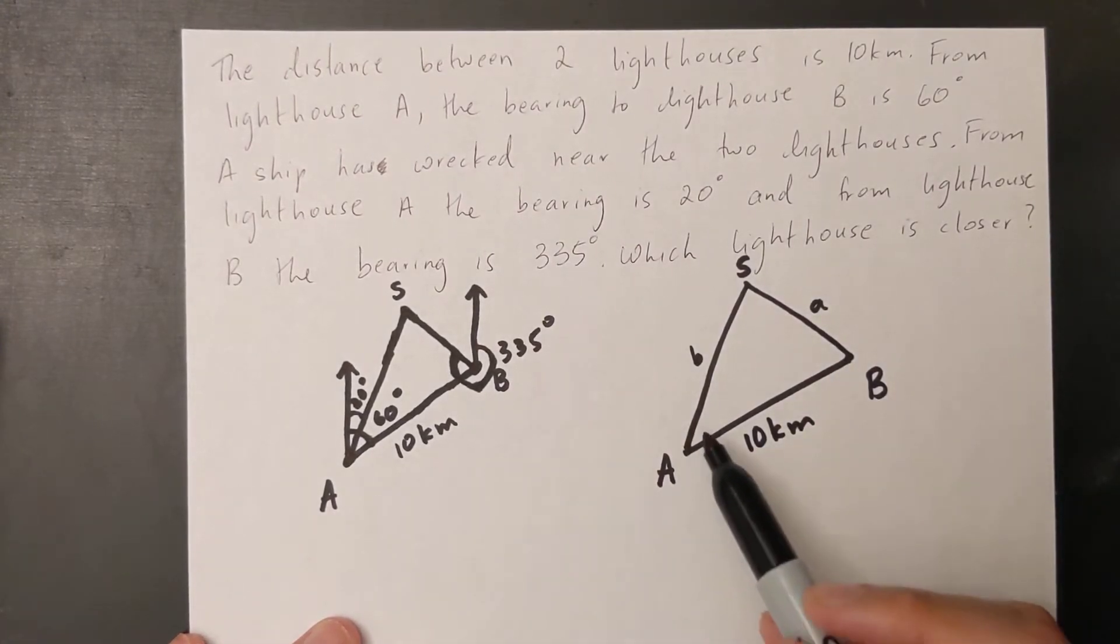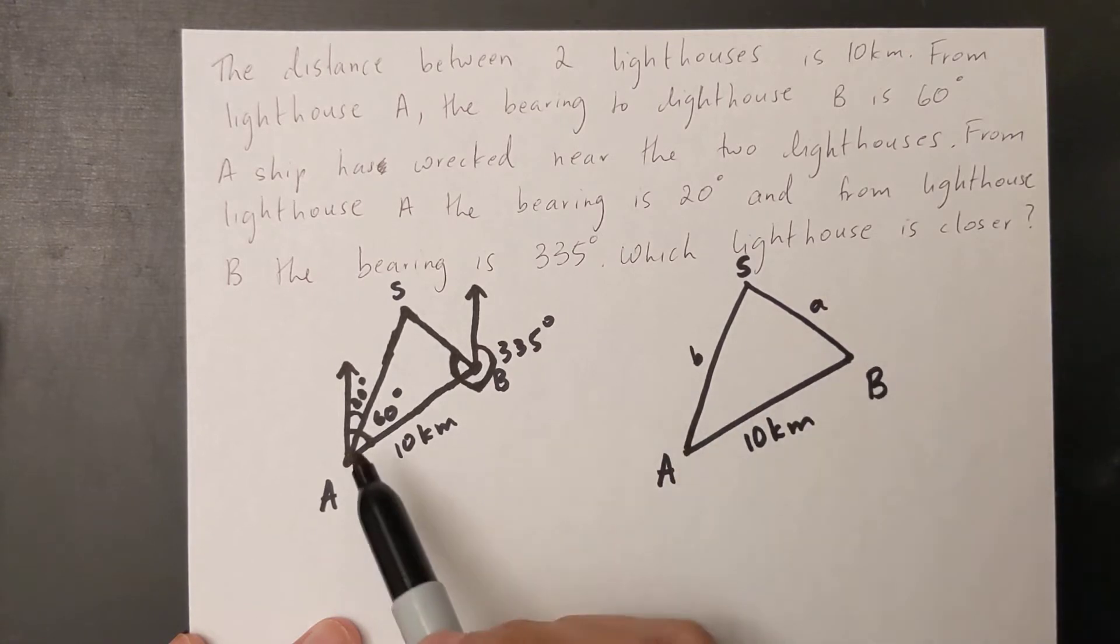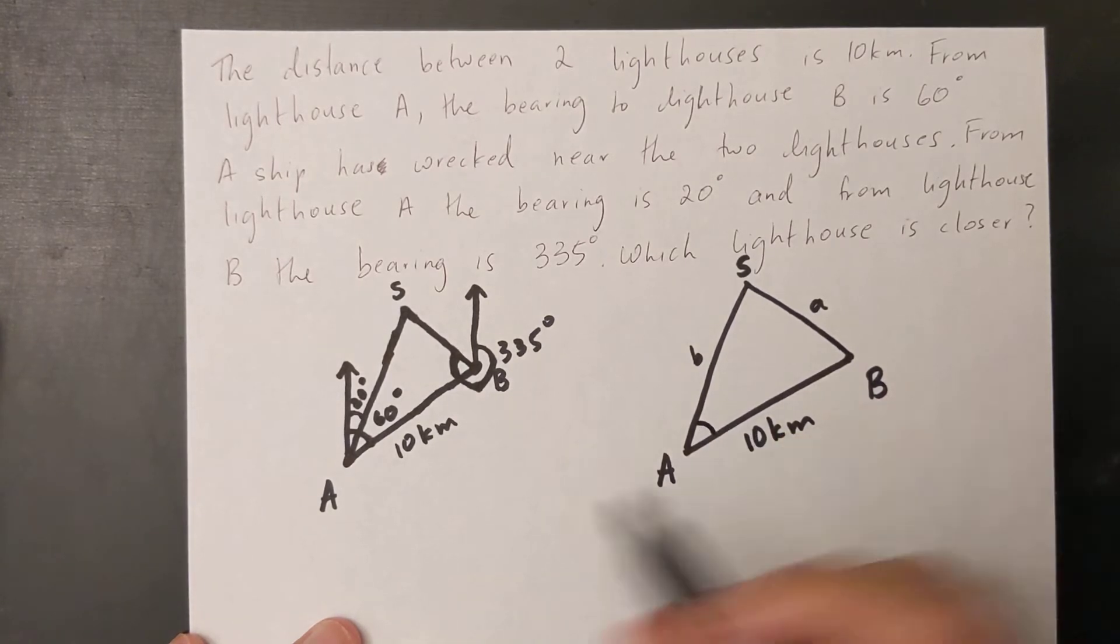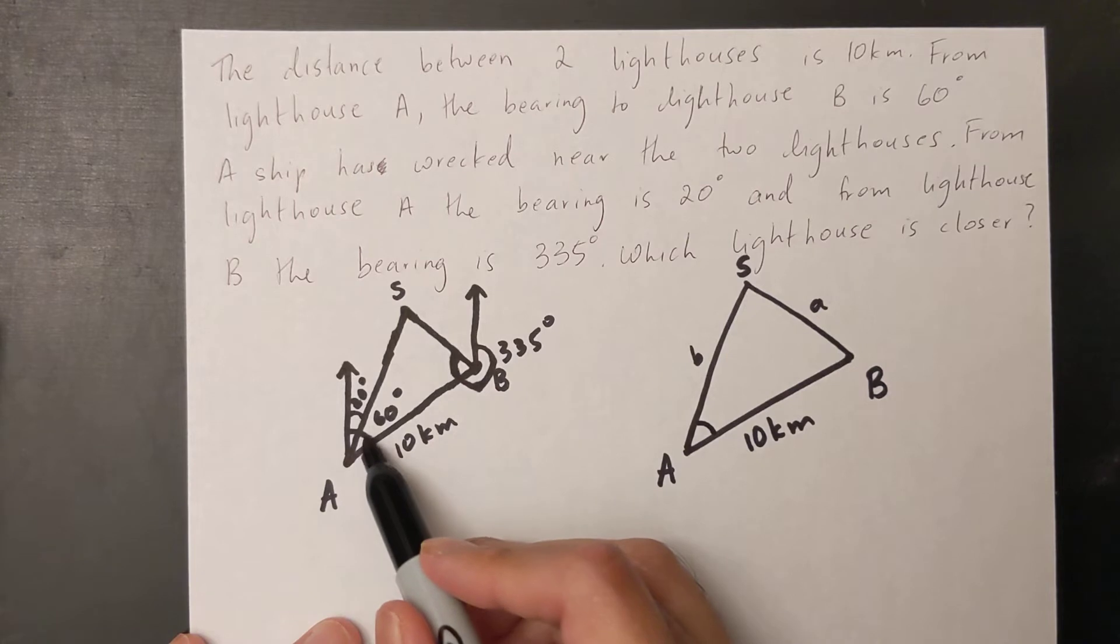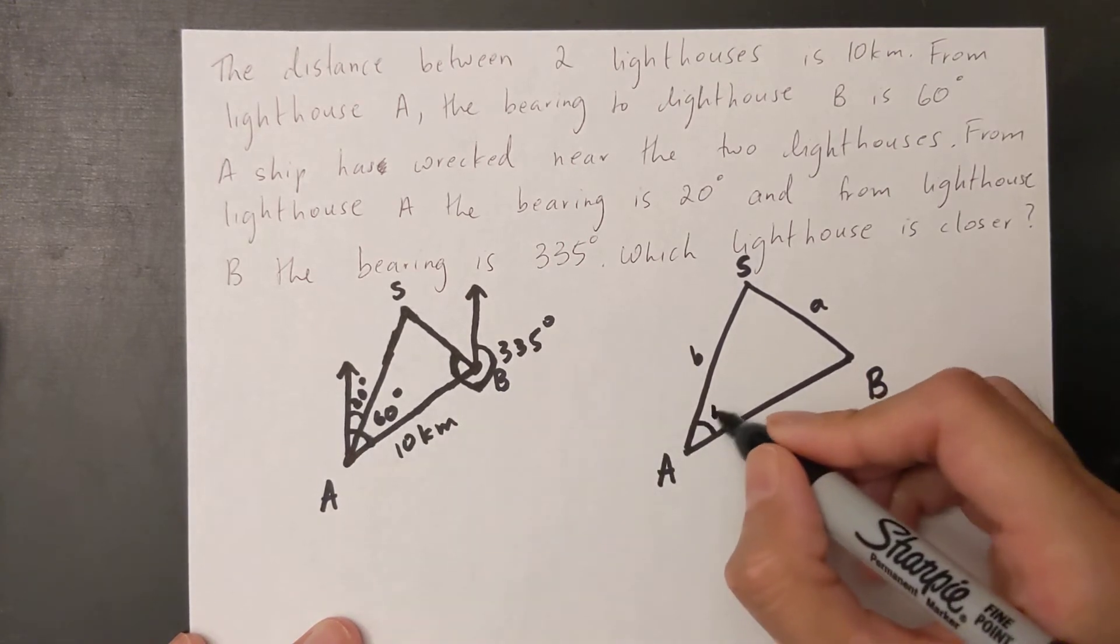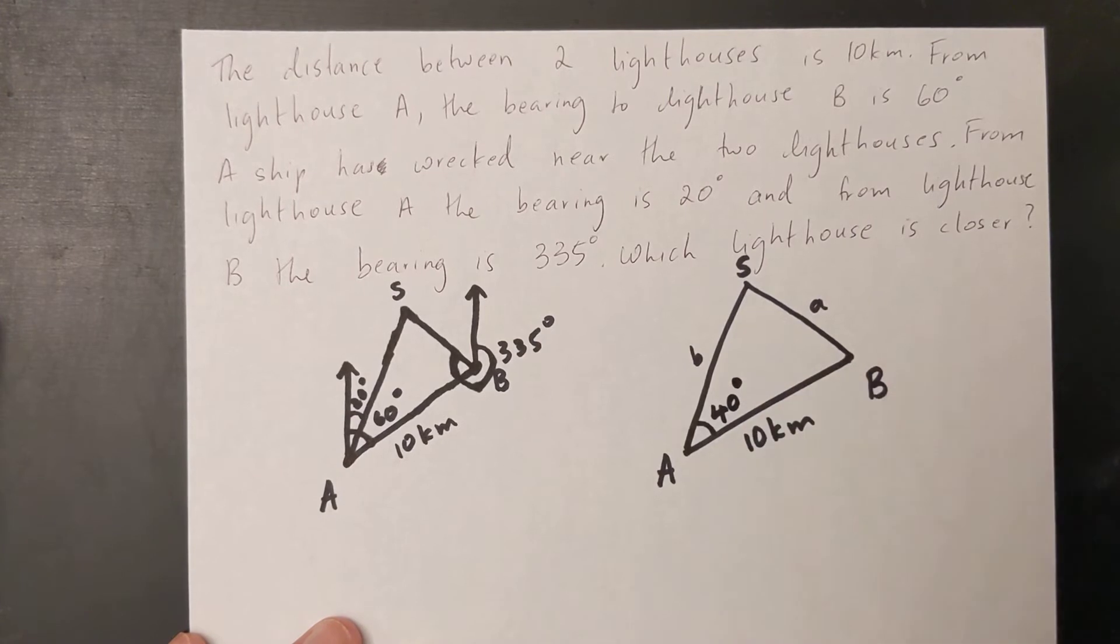Now in this triangle I don't know anything else but I can find a few other things using the bearings over here. The first thing I can find is this tiny angle. So this tiny angle here is the whole big angle minus that small 20 degrees over there. So 60 minus 20 makes this angle 40 degrees.